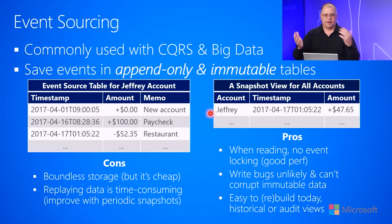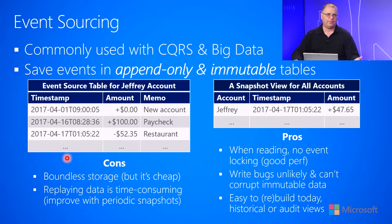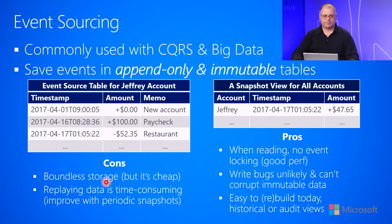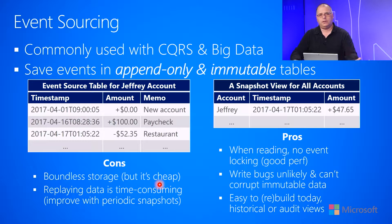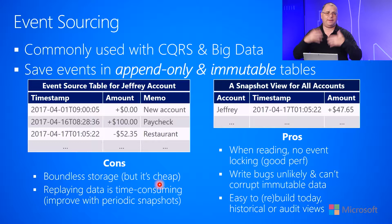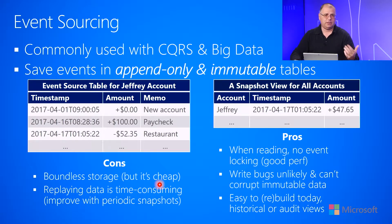One of the cons of an event sourcing model is that the storage is effectively boundless. You're constantly appending to the end of this table, and over time the table just grows and grows. The good news is that storage is typically very cheap. Cloud-based storage is usually one of the cheapest cloud services you can buy, so it's usually very inexpensive to store large amounts of data like this, which is why we have big data initiatives today — we can store big data efficiently and cost-effectively.